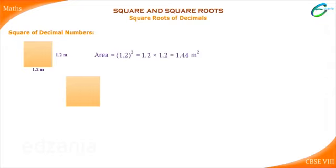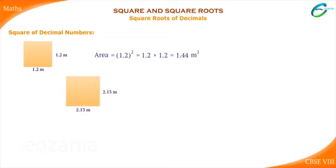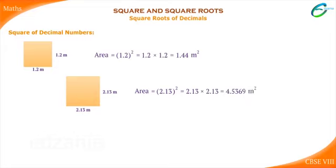We have one more square land. The side of this square land is 2.13 meters. What would be the area? Area is equal to 2.13 square, which is equal to 2.13 into 2.13, which is equal to 4.5369 meter square.